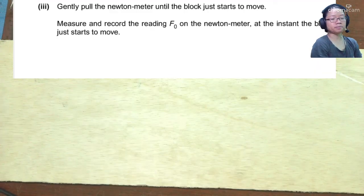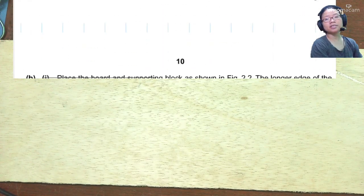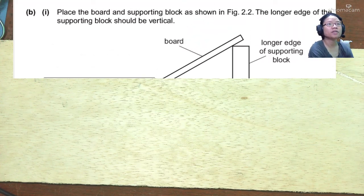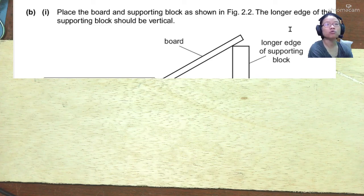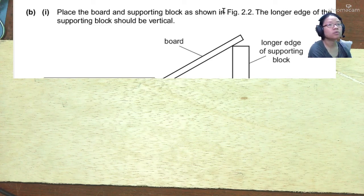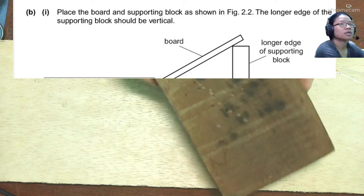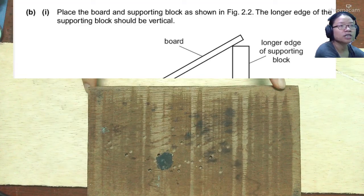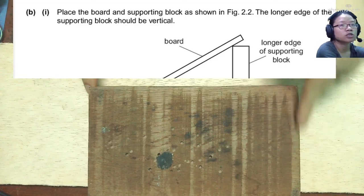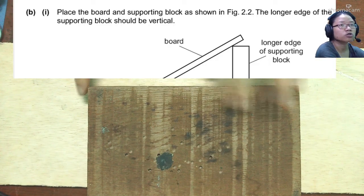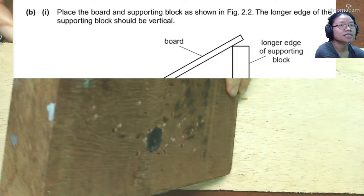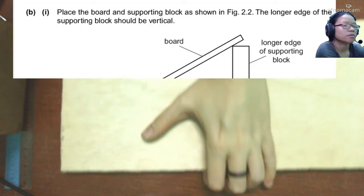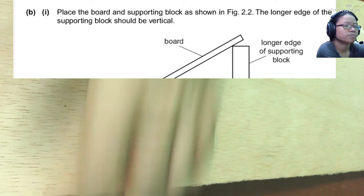So now we're going to move on to the next part where we will place the incline. Place the board and the supporting block as shown in figure 2.2. The longer edge should be vertical. So let me show you what I mean. I have this block here. It has two edges. Here to here is the longer edge, and here to here is the shorter edge. So right now you want the longer edge to be vertical, so it will stand like this. I'm going to raise the board and put it like so.